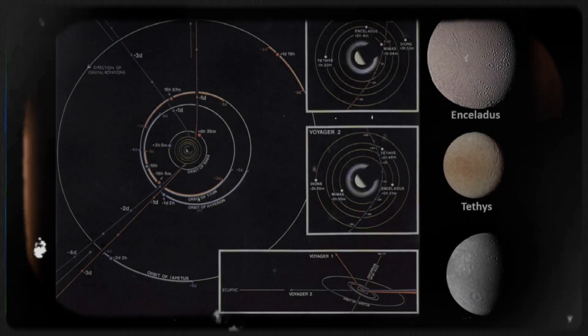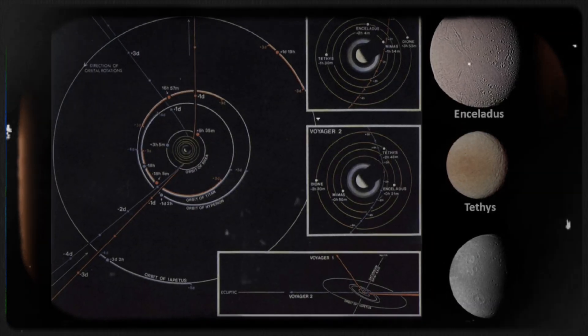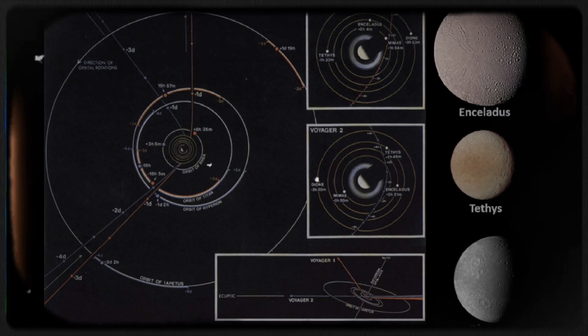The incredible variety of moonscapes discovered by the Voyagers around Jupiter and Saturn was entirely unexpected.